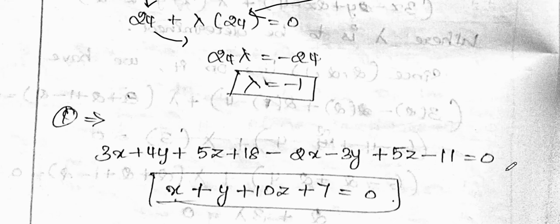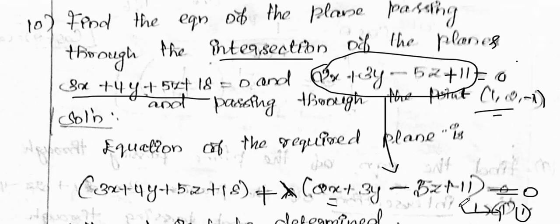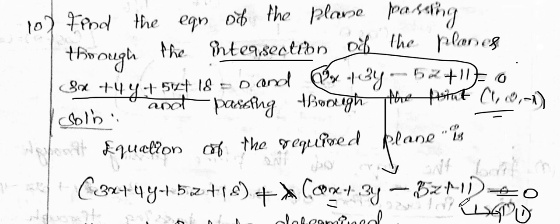Combining: (3x - 2x) + (-3y + y) + (5z + 5z) + (18 - 11) = 0, which gives x - 2y + 10z + 7 = 0. This is the equation of the required plane — the intersection of the two planes passing through the given point.